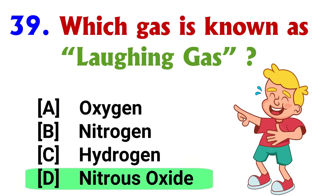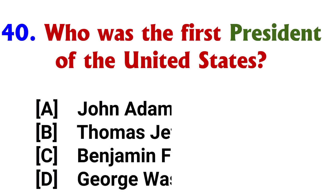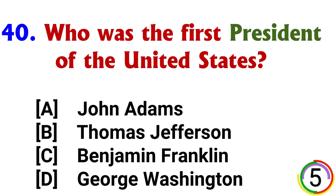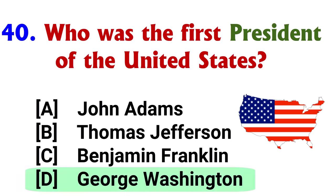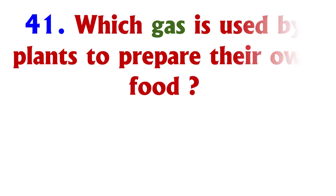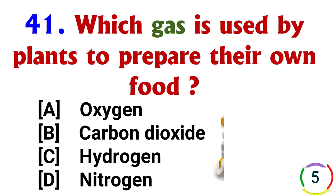Which gas is known as laughing gas? Answer: option D, Nitrous oxide. Who was the first president of the United States? Answer: option D, George Washington.